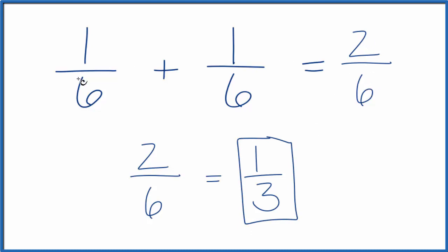This is Dr. B adding the fractions one-sixth plus one-sixth. You get either two-sixths, or if you simplify that, one-third. Thanks for watching.